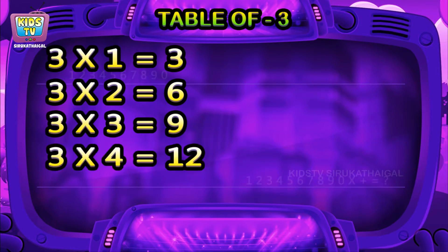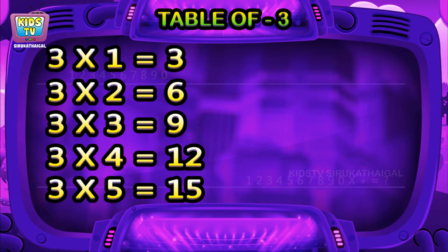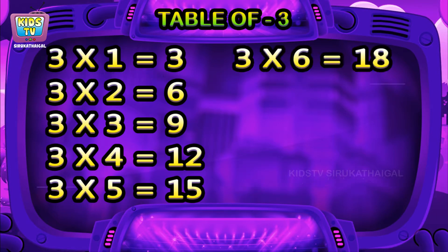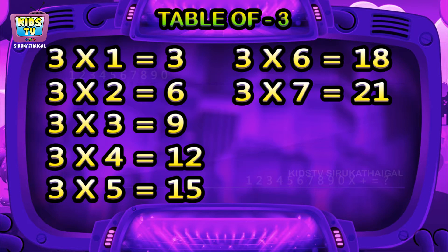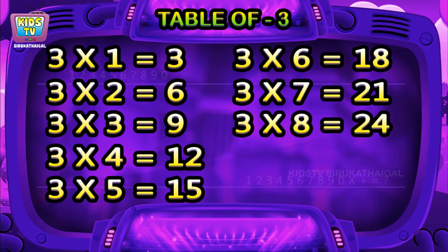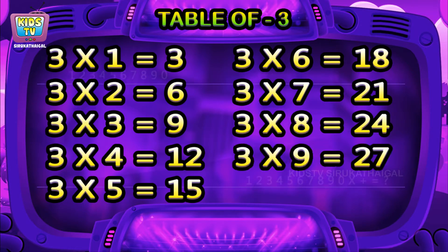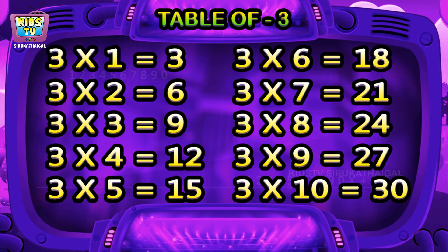Three fours are twelve, three fives are fifteen, three sixes are eighteen, three sevens are twenty-one, three eights are twenty-four, three nines are twenty-seven, three tens are thirty.